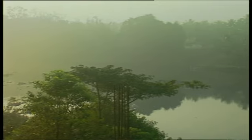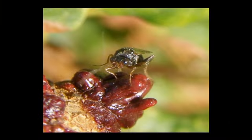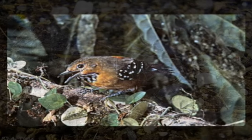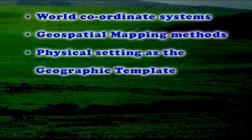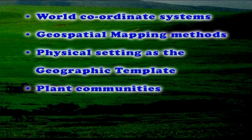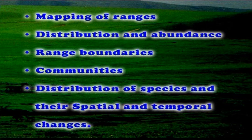Let us see the third aspect: biogeographic patterns. Environmental setting has a bearing on biogeographic patterns. Organisms can be found in almost every part of the Earth, but each species has a restricted geographic range in which it encounters a limited range of environmental conditions like latitude, altitude, climates, and habitats. Biogeography includes the following aspects: world coordinate systems, geospatial mapping methods, physical setting as the geographic template, plant communities, animal species, human settlements, mapping of ranges, distribution and abundance of species, range boundaries, communities, and the distribution of species with their spatial and temporal changes.